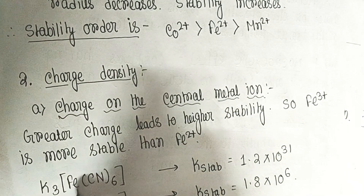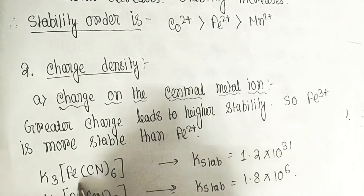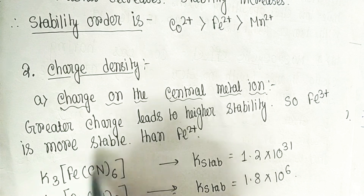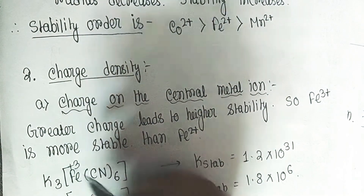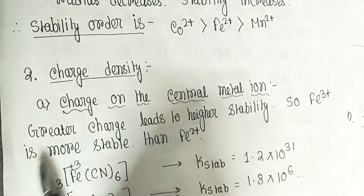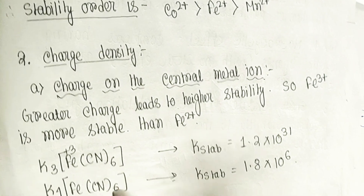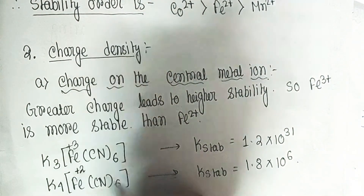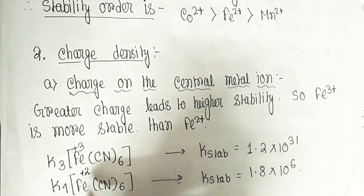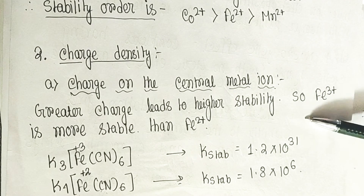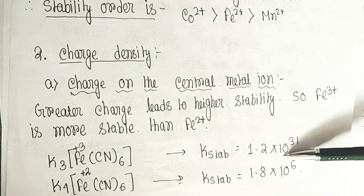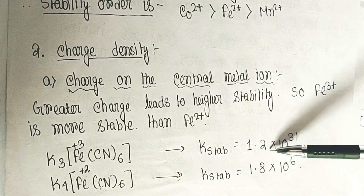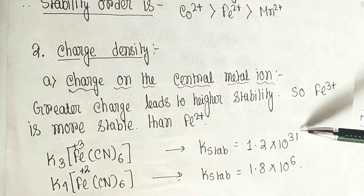We can see two complexes: [Fe(CN)₆]³⁻ where iron is in the +3 state, and [Fe(CN)₆]⁴⁻ where iron is in the +2 state. The stability constant value for the +3 state is much higher than for the +2 state — 10³¹ compared to only 10⁶ — confirming that higher charge leads to greater stability.